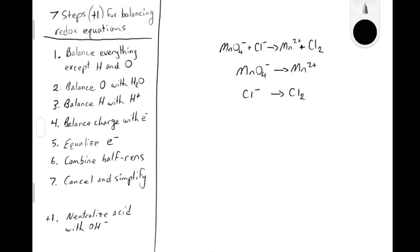The first step is to balance everything except the hydrogens and oxygens by inspection. In this case, that just means manganese — there's one manganese on the reactant side and one on the product side, so it's balanced. Step two is to balance oxygens by adding water. There are four oxygens on the reactant side, which means we need to add four waters to the product side. Adding four waters provides four oxygens.